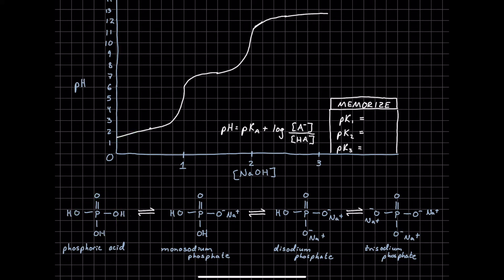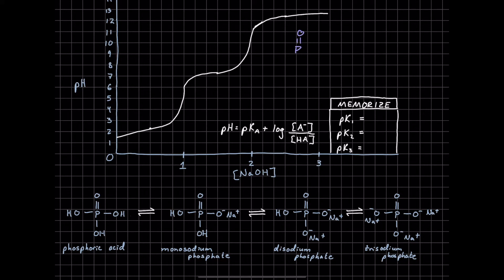Now as we start to increase the amount of sodium hydroxide — the base that we're using on this x-axis here — we start to get a little bit more of a new species called monosodium phosphate, where we deprotonated one of these H's to make O minus. If we draw out our phosphoric acid up here, it's going to be a basic Bronsted-Lowry acid-base reaction where we take this sodium hydroxide, which is very basic of course, and we abstract that H and then we put a negative charge on the O. We end up with that monosodium phosphate and water. And that's going to be the case for creating disodium phosphate and trisodium phosphate, just with the different hydrogens.